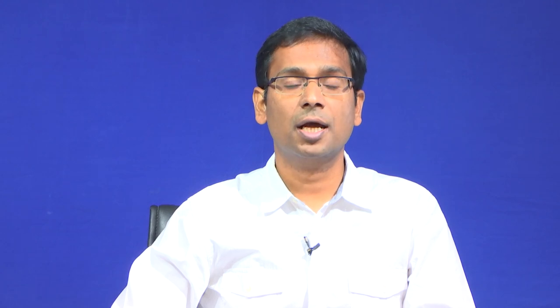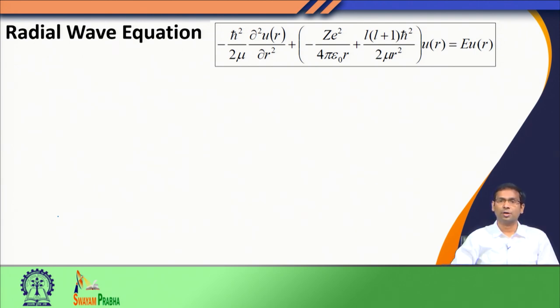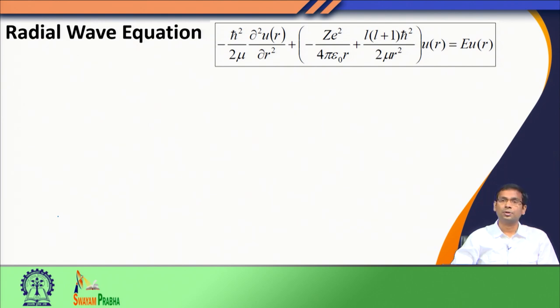We defined the hydrogen atom's Hamiltonian in terms of kinetic energy and potential energy. The Hamiltonian for the hydrogen atom had a kinetic energy contribution from the nucleus and from the electron. We replaced this kinetic energy operator, which had electron and nuclear coordinate dependence, into two one-body problems: the movement of the center of mass, and the kinetic and potential energy of the internal motion of the hydrogen atom — that is, the relative distance between the electron and the nucleus.